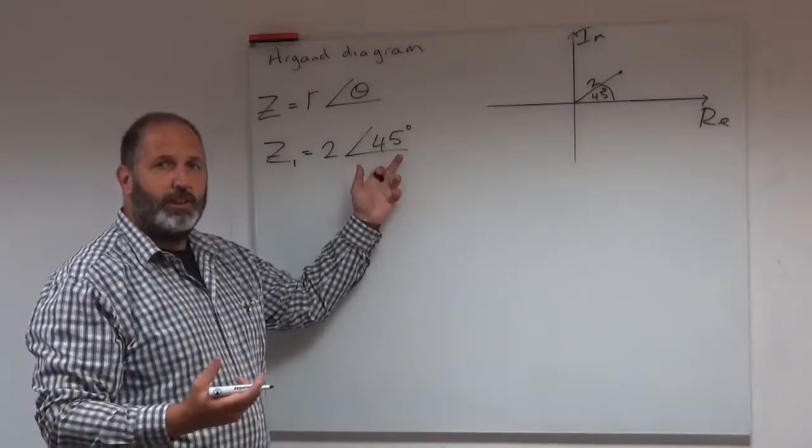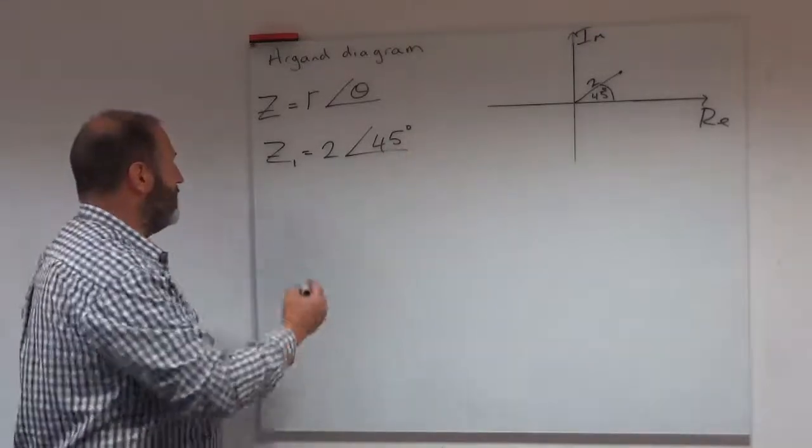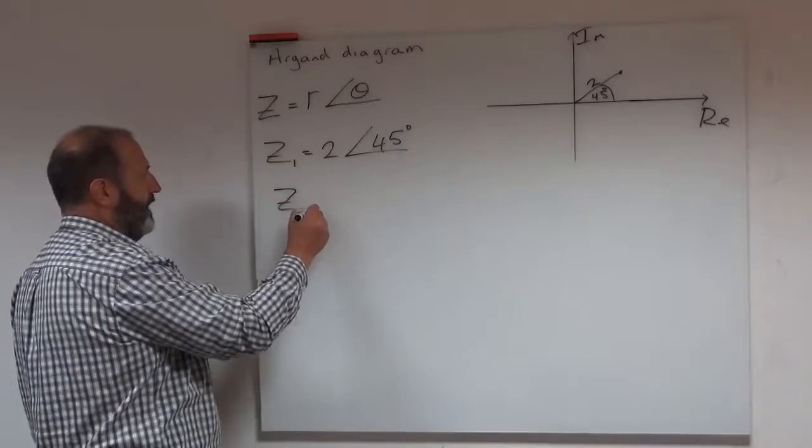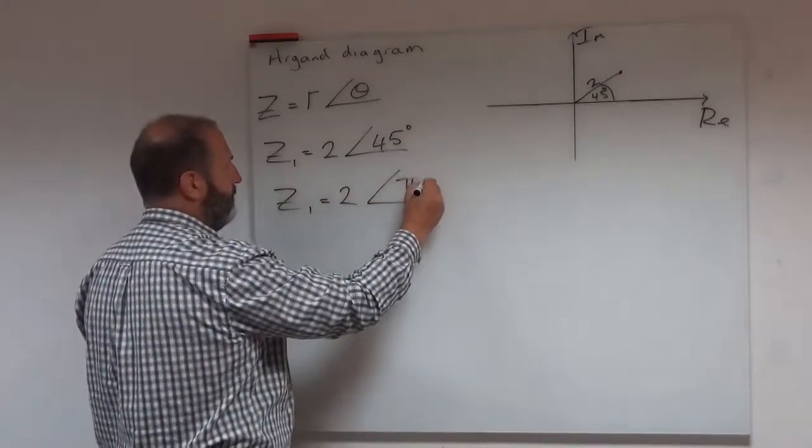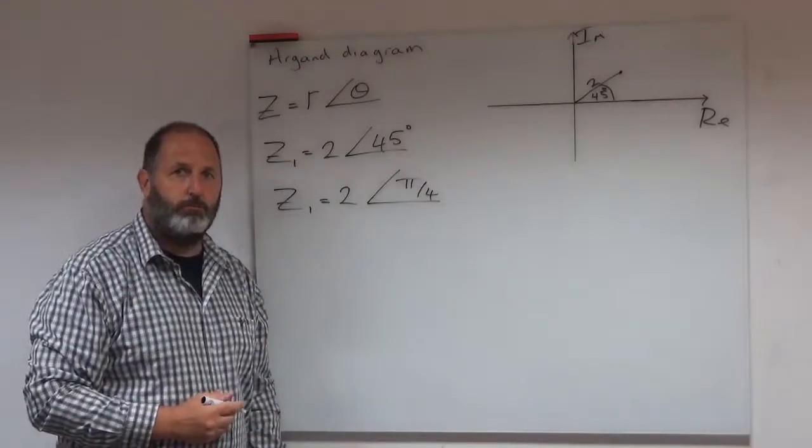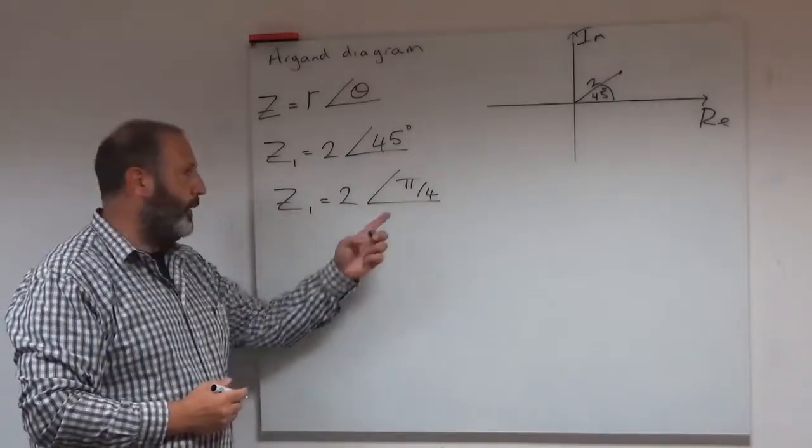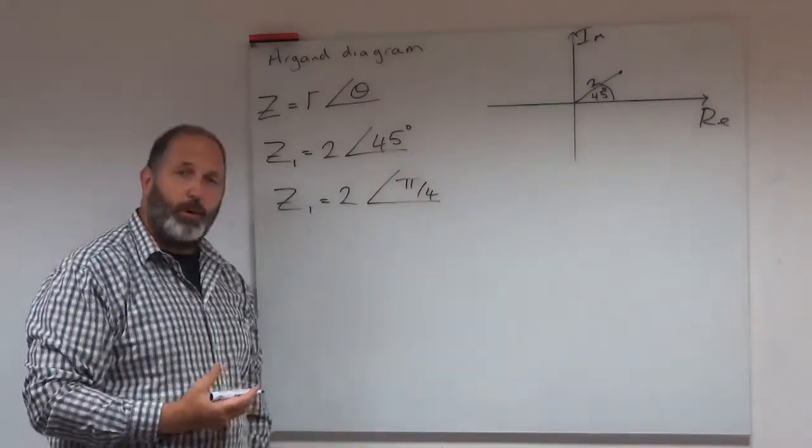How else could we write this? Well, this is in degrees and it may be working in radians. So I could have said z1 is 2 and then pi over 4. It would be exactly the same. Pi over 4 is equivalent to 45 degrees when it's pi over 4 radians.